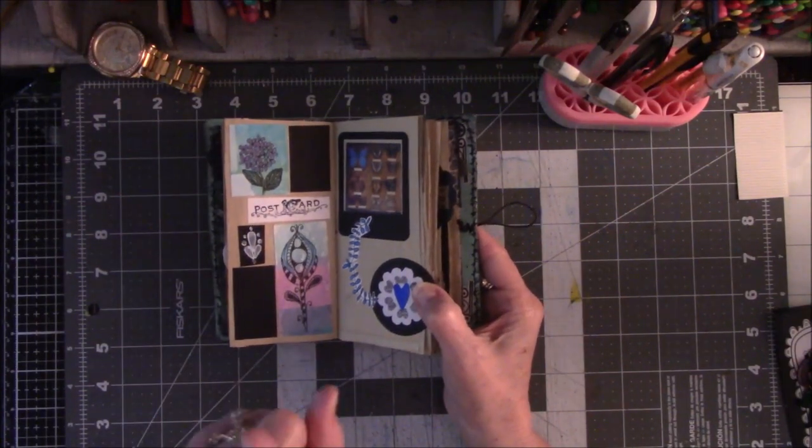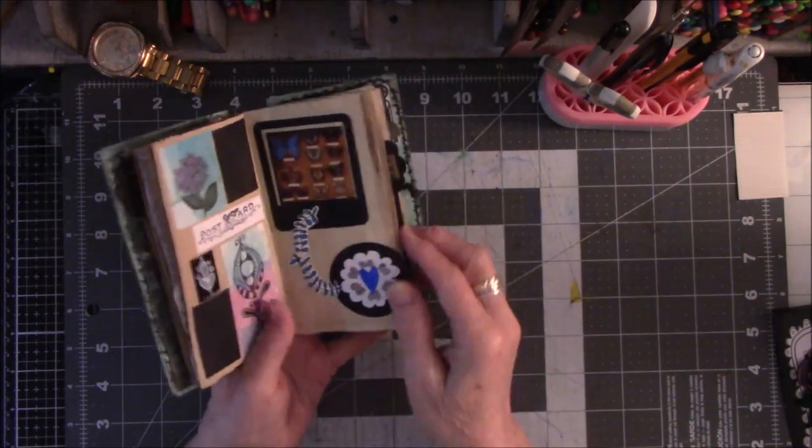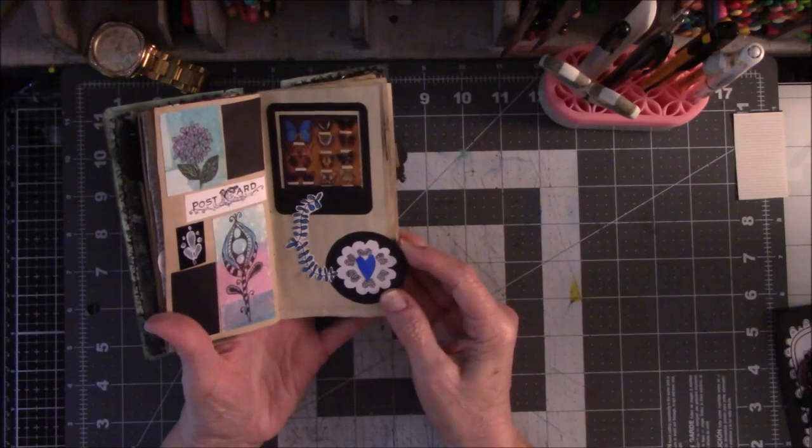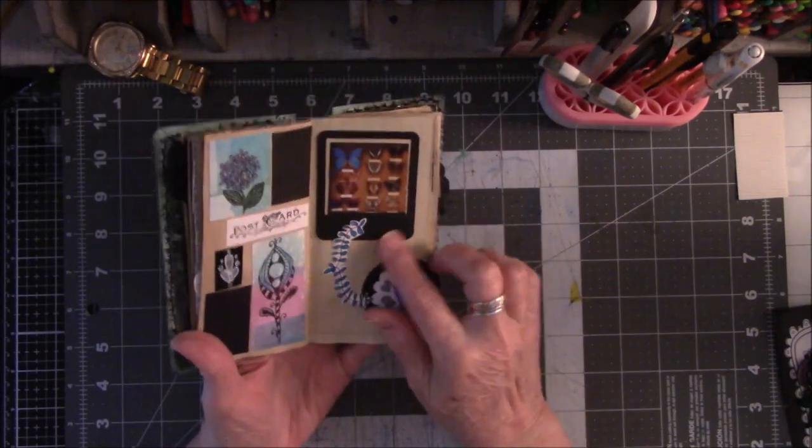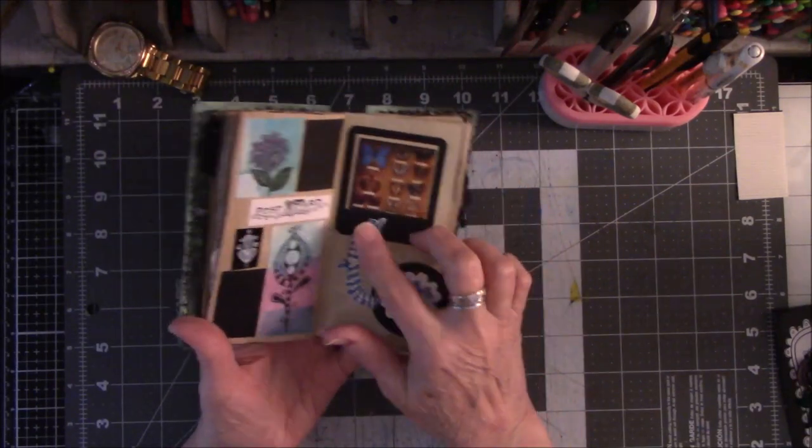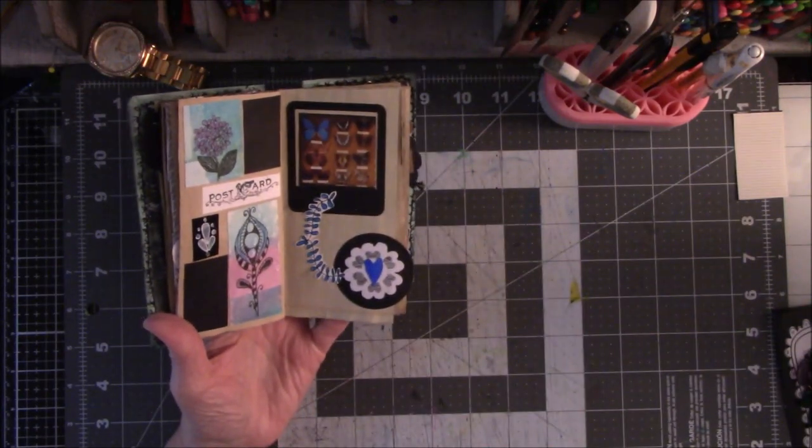Peg did send me a white stamp, and it'll be in here somewhere else. This was just stuff I put together because I really like the butterflies, and here is that slide die cut.